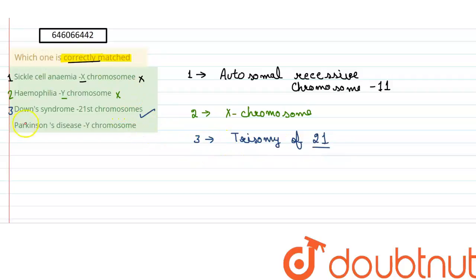The last option is Parkinson's disease is related to Y chromosome. This is again wrong because Parkinson's disease is a neural disorder in which there is nerve cell damage. So the last one is also an incorrect match.